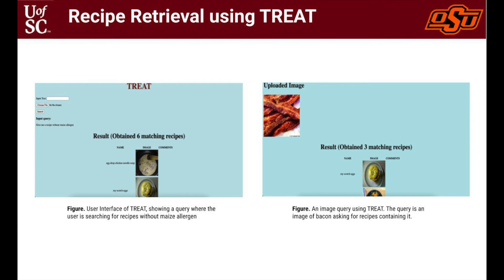Here, we demonstrate the current version of Treat. The figure on the left-hand side shows a user querying for a recipe without maize allergens, whereas the figure on the right-hand side shows the user querying the Treat system using the image of bacon and asking for recipes containing it.